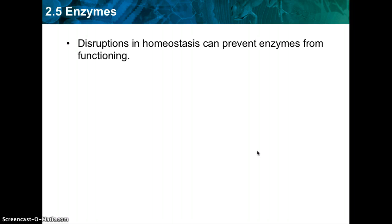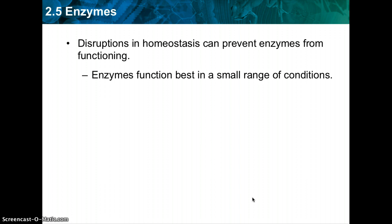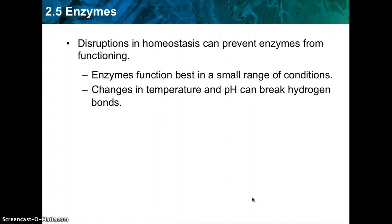Enzymes play essential roles in controlling chemical pathways, making materials that cells need, releasing energy, and transferring information. Because they are catalysts, enzymes can be affected by any variable that influences a chemical reaction, such as temperature, pH, and regulatory molecules, which can affect the activity of an enzyme.